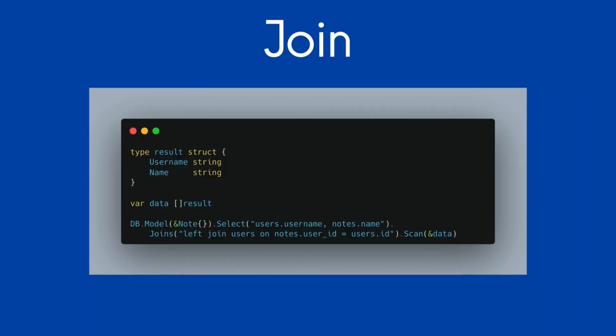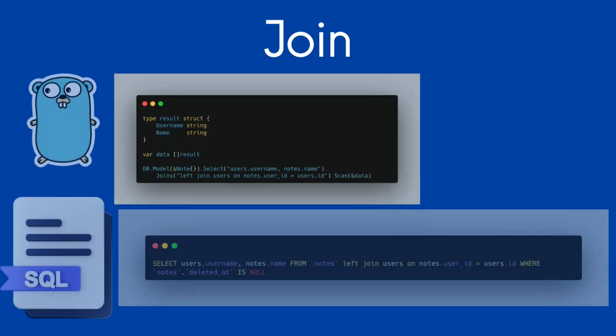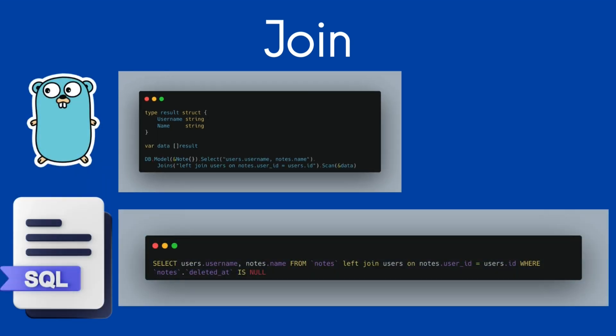Let's see what a joins function looks like. Here in the query, we are fetching only the username of the user and the name of the note. These GORM functions translate to a join query to the database. Since we are fetching only the required fields, we need a new structure to hold the results that we have defined here.